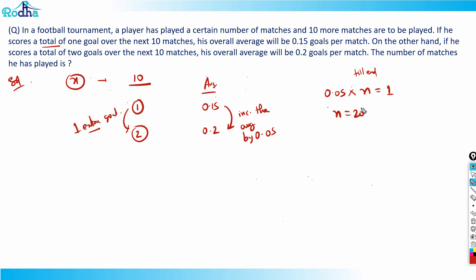So n equals 20 here. The number of matches played till the end is 20. But this was the if case - if he scores a total of one goal over the next 10 matches. So x plus 10 equals 20, therefore x equals 10.